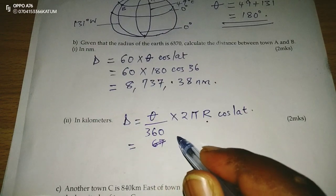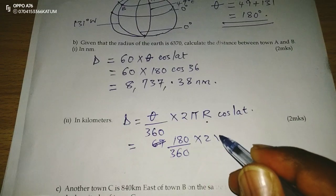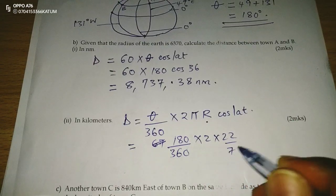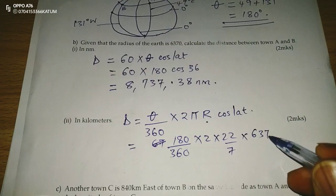So we will have theta, 180 out of 360, multiplied by 2 pi. We can pick 22 out of 7. The radius is 6370,